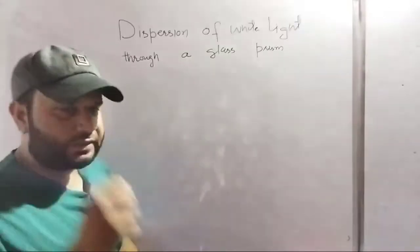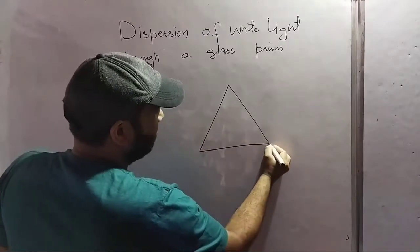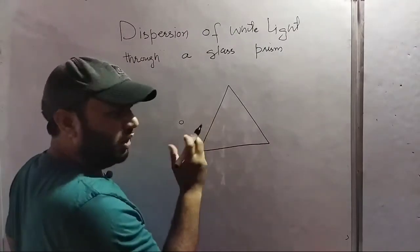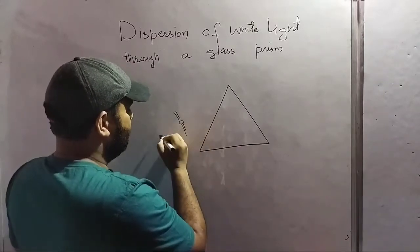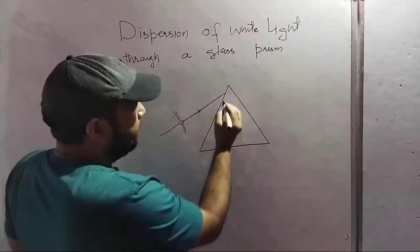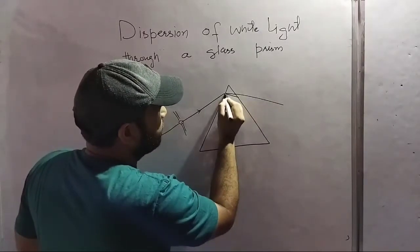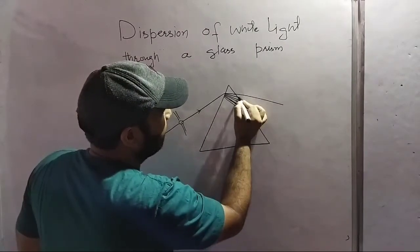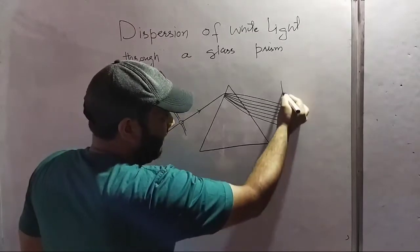Suppose I will take a prism — we have already explained the prism and its expression. Now suppose hum ek slit lenge — slit matlab hole — so that one sharp beam of light can be produced. We take the slit like this, and pass light through it so it is incident on the prism. This is the white light, the incident ray, and it will split — first refraction hoga — it will split into a band of seven colors.